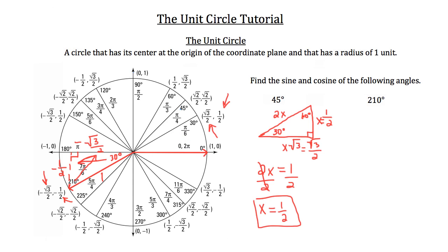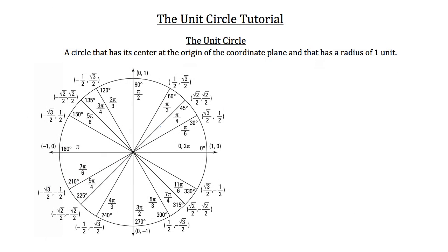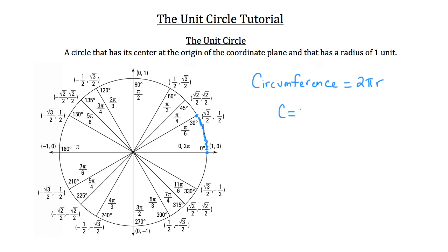Now I'm going to show you one last set of values on the unit circle: the radian values such as pi over 3, pi over 4, pi over 6, and so on around the circle. Those are the radian values of the arc length of the circle from the starting point to each labeled point. If you wanted to solve for the circumference of a circle, you'd use 2 times pi times the radius. The unit circle has a radius of 1, so its circumference is just 2 pi.